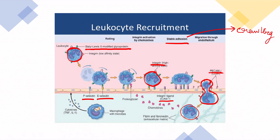Neutrophils don't have eyes, so the story doesn't end at transmigration — the neutrophil still has to make its way to the site of inflammation. Since neutrophils can't see, we need chemoattractants. Examples of chemoattractants include C5a and kallikrein. At the site of inflammation, chemoattractants are secreted, and neutrophils are good sniffers — they sniff the chemoattractant and reach the site of inflammation. That is the journey of a neutrophil from blood circulation through the endothelial surface to the site of inflammation.